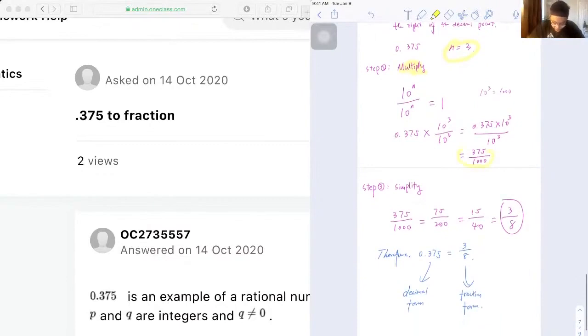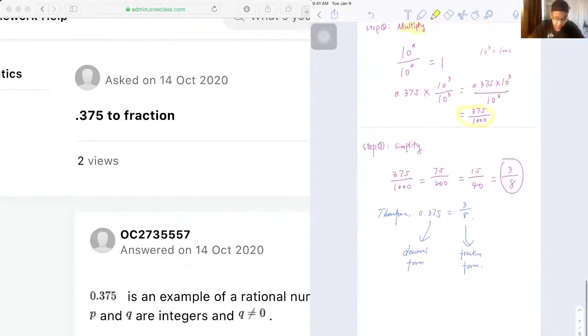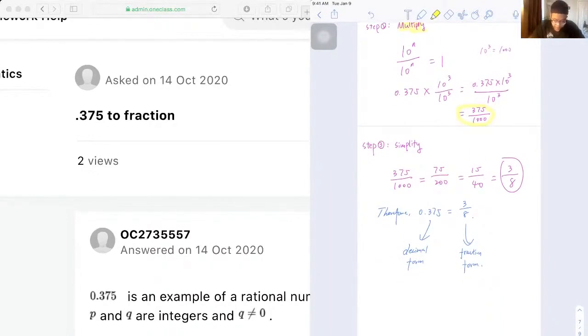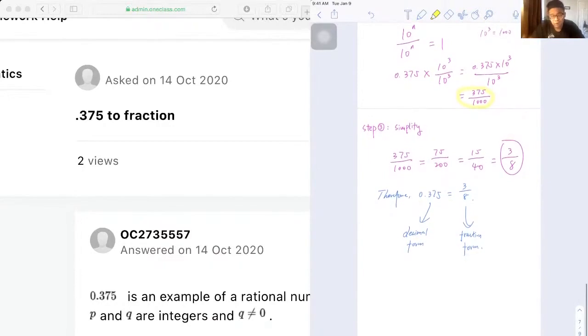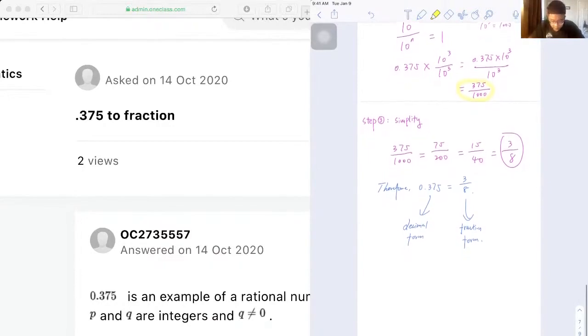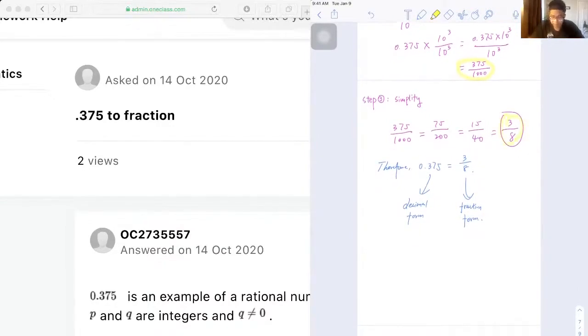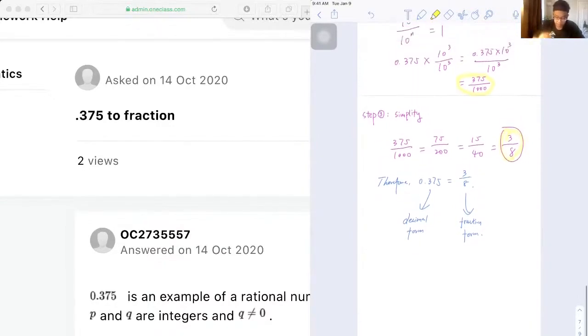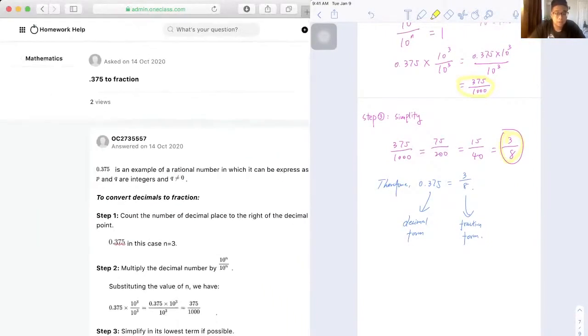So after getting that we might get a value that could be simplified further, so that comes our third step, which is simplifying. And then we need to find the common factors for both the numerator and denominator, and then do our calculation in order to get our simplest form. And that's just how we do this type of question.